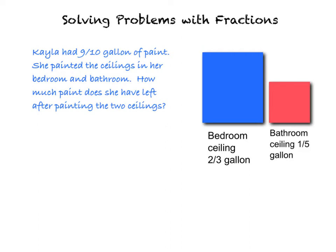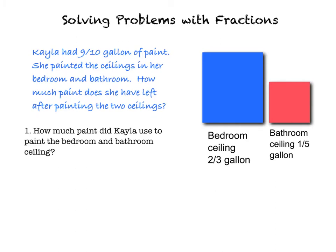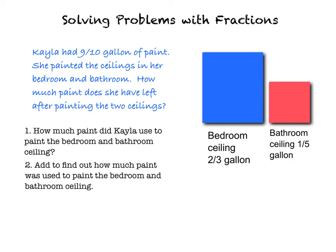Because she had to paint those two ceilings, that's going to be really important. So what I have to do is use this number and this number, because this tells me how much paint she used for the bedroom and how much paint she used for the bathroom. Now in order to figure that out, what operation am I going to use? I'm going to add, because I have to find out how much paint she used to paint both of the rooms, both of those ceilings. I'm going to take two thirds plus one fifth, and that's going to tell me how much paint was used.